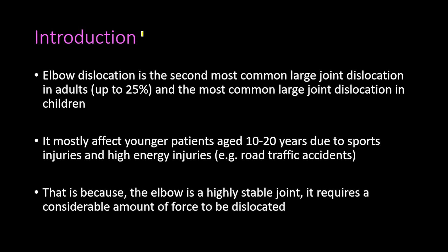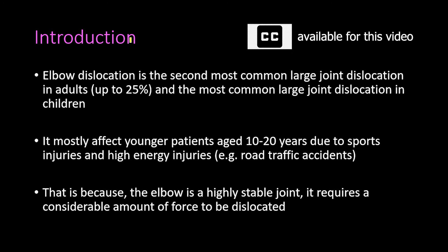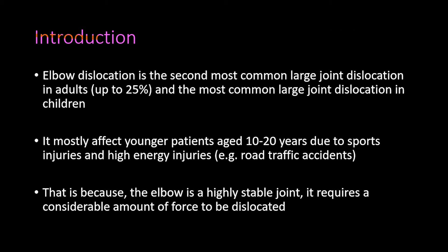In our talk about elbow dislocations, we will start with an introduction. Elbow dislocation is the second most common large joint dislocation in adults, accounting for up to 25% of large joint dislocations in adults, and it is the first most common large joint dislocation in children.